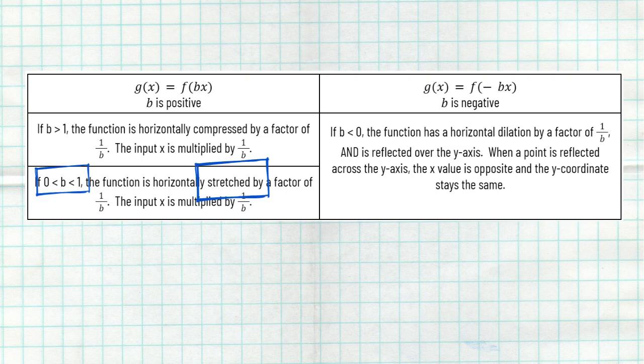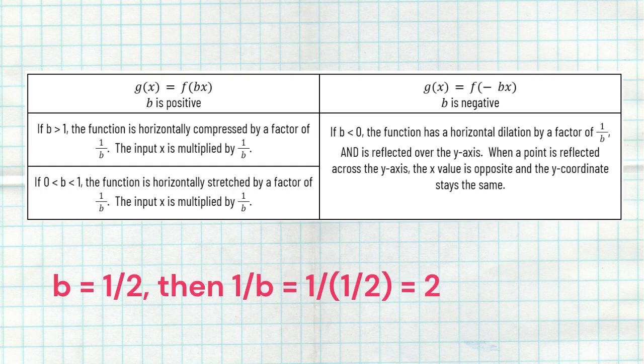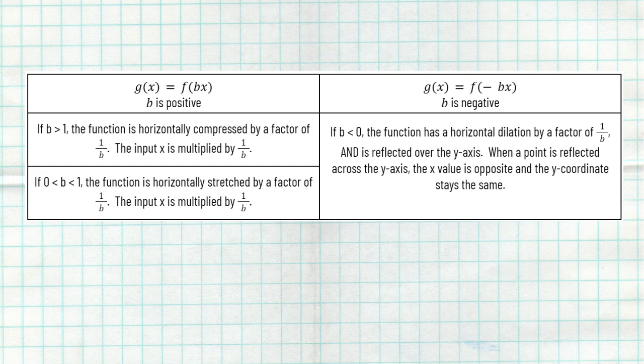That's going to shrink or compress you horizontally. If your b value is between zero and one — let's just say one half for example — then that's going to stretch you by a factor of one over b. You might wonder: one over b is still the formula. But think about it: if my b value is a fraction like one half, one divided by one half reciprocates it to a two. That is why when your b value is between zero and one, it's actually going to be a stretch, because it's going to multiply you by the reciprocal, and the reciprocal of one half is going to be two. So it's actually going to stretch you out wider. The input value is going to be multiplied by one over b, no matter what.